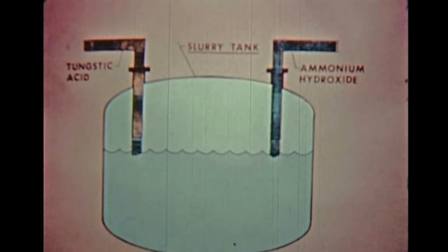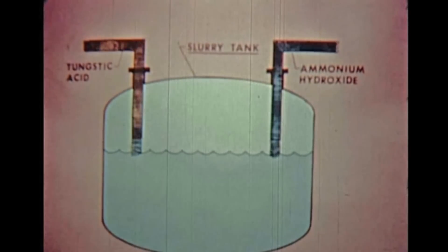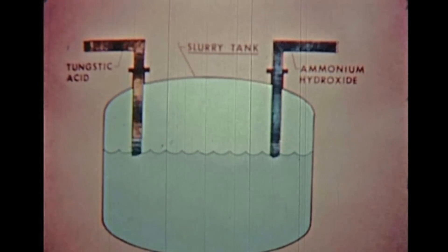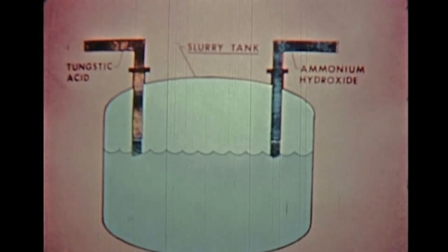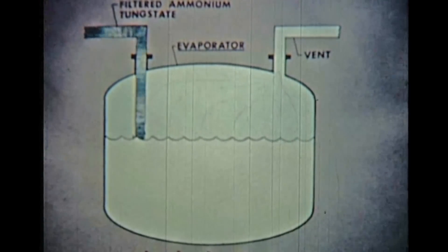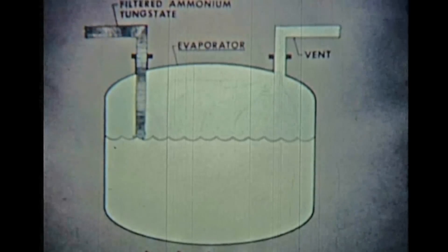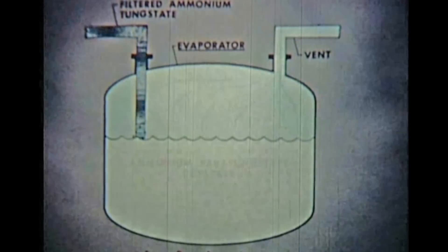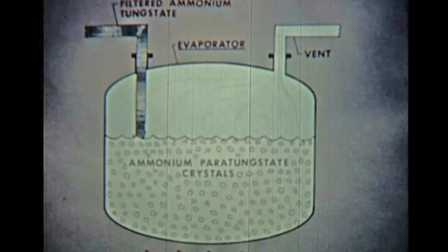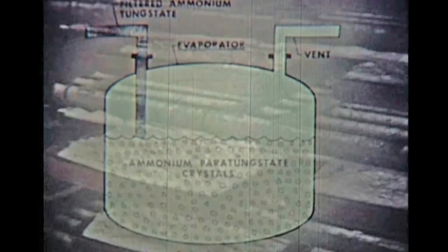The washed tungstic acid slurry is pumped into a tank with ammonia. The tungstic acid dissolves to form ammonium tungstate. This liquid is then filtered in the same manner as the sodium tungstate. The ammonium tungstate solution is heated to drive off water and excess ammonia, resulting in crystals of ammonium paratungstate. The crystals are removed before all the liquid disappears and are washed and dried.